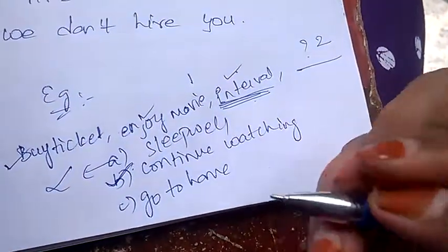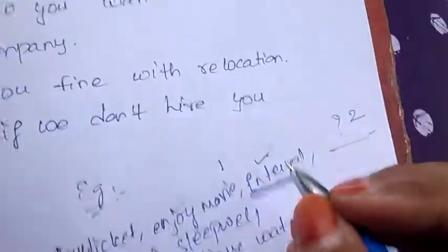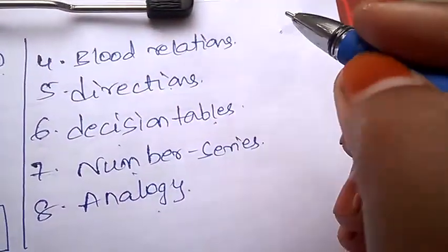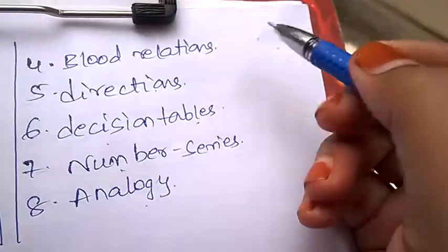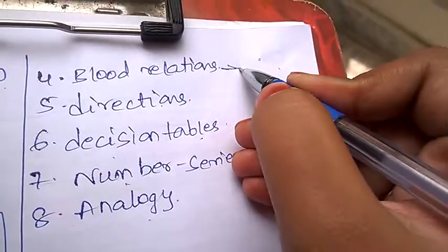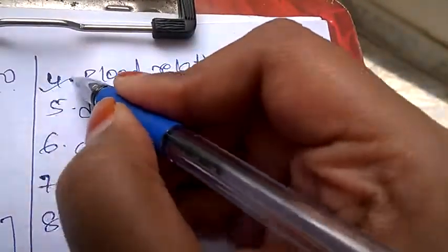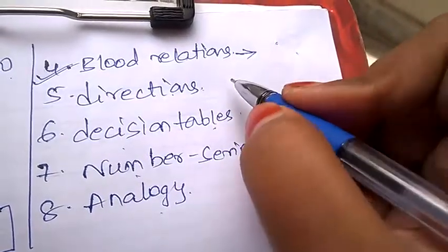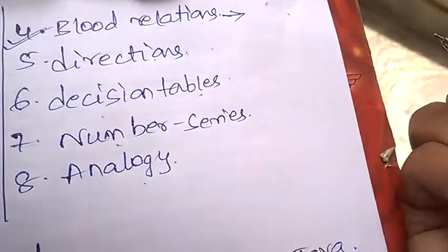Next, blood relations. Blood relations are very easy. I've already made a video on this, so please watch that video. Under blood relations there'll be complex questions, so concentrate more on blood relations. There'll be questions on directions, like in which direction is the person walking at present.